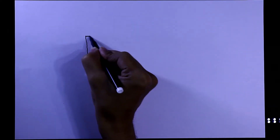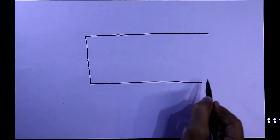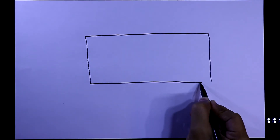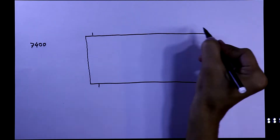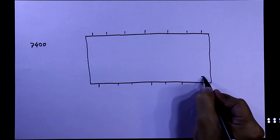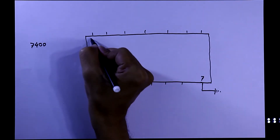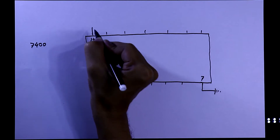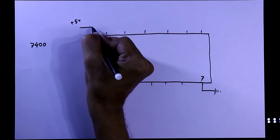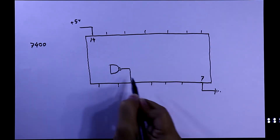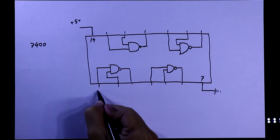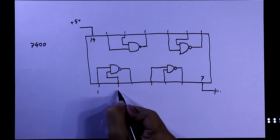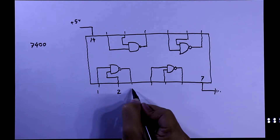Before we see this on the breadboard, we have to see the pin diagram of IC 7400, which is the NAND gate IC. It has 14 pins. Pin number 7 should be connected to ground and pin number 14 should be connected to plus 5 volts. It has 4 NAND gates. Pins 1 and 2 are the inputs and pin 3 is the output of the first NAND gate.